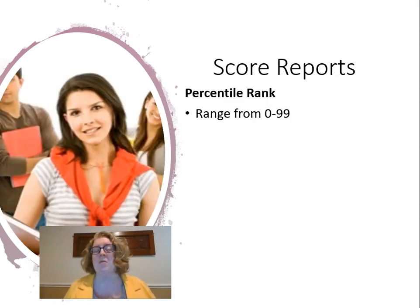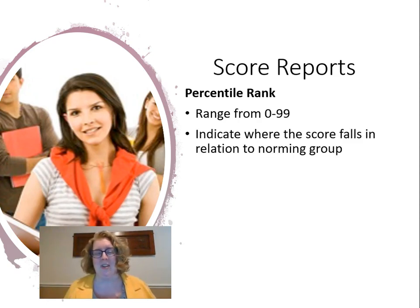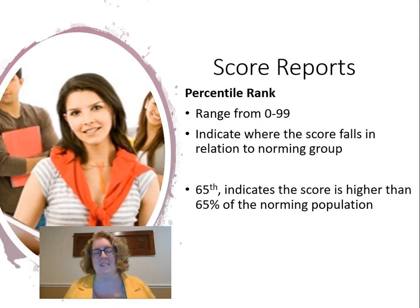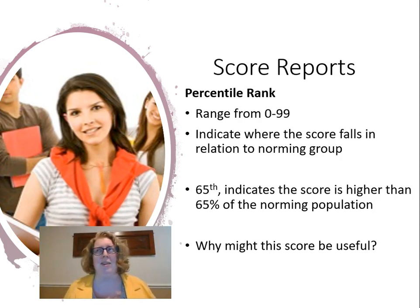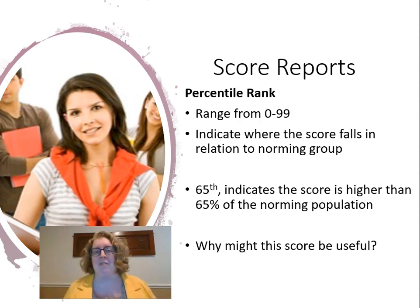Percentile rank is probably the most common way we report norm reference scores. It indicates where scores fall in relation to the norming population — for example, the 65th percentile means the student scored higher than 65% of the norming population. It's really common to report this to parents, but it can be confusing. Parents might misinterpret a 65th percentile to mean the student got 65% of the questions right — like a D — when in fact the student scored better than 65% of the norming group, which is above average. So we want to be really careful to explain it fully.